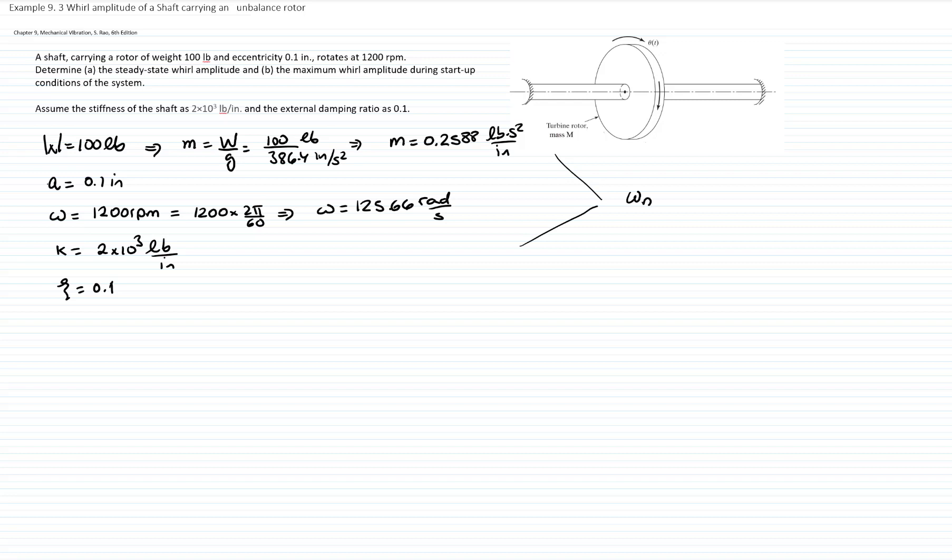With that, we can calculate the natural frequency, which is the square root of k over m, and that will be 2000 over 0.2588, and that gives me a natural frequency of 87.9 radians per second.